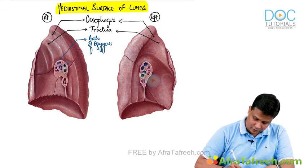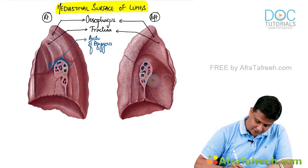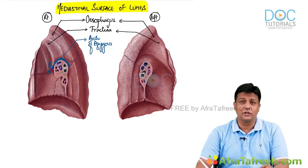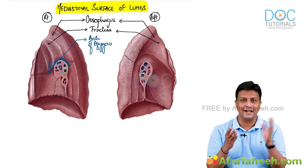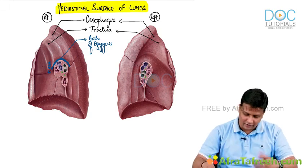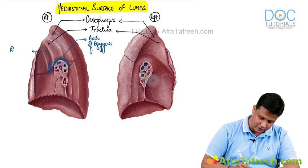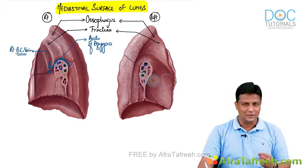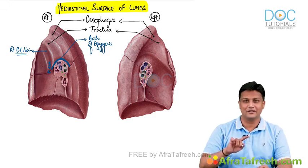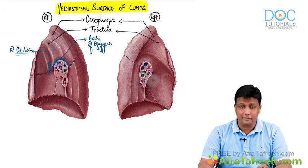If the arch of the azygos vein is present, we know it will drain into the superior vena cava. So definitely here you should have your superior vena cava — that impression is representing the superior vena cava. The superior vena cava is formed by the right and left brachiocephalic veins. So if you see one impression just above the superior vena cava, that should be representing your right brachiocephalic vein. That is how you deal with things one by one logically.